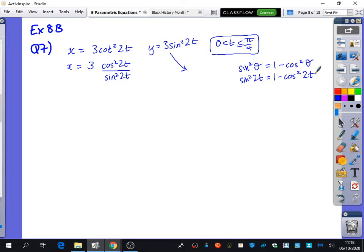So what I can do here is I can actually replace the sine squared with 1 minus cos squared 2t. So y is 3 lots of 1 minus cos squared 2t. And I'm trying to find out what cos squared 2t is, so I can substitute it into this part of the parametric equation. So y is 3 minus 3 cos squared 2t. And when I rearrange this, I get that 3 cos squared 2t is 3 minus y, just by swapping those things around. So cos squared 2t is 3 minus y divided by 3.